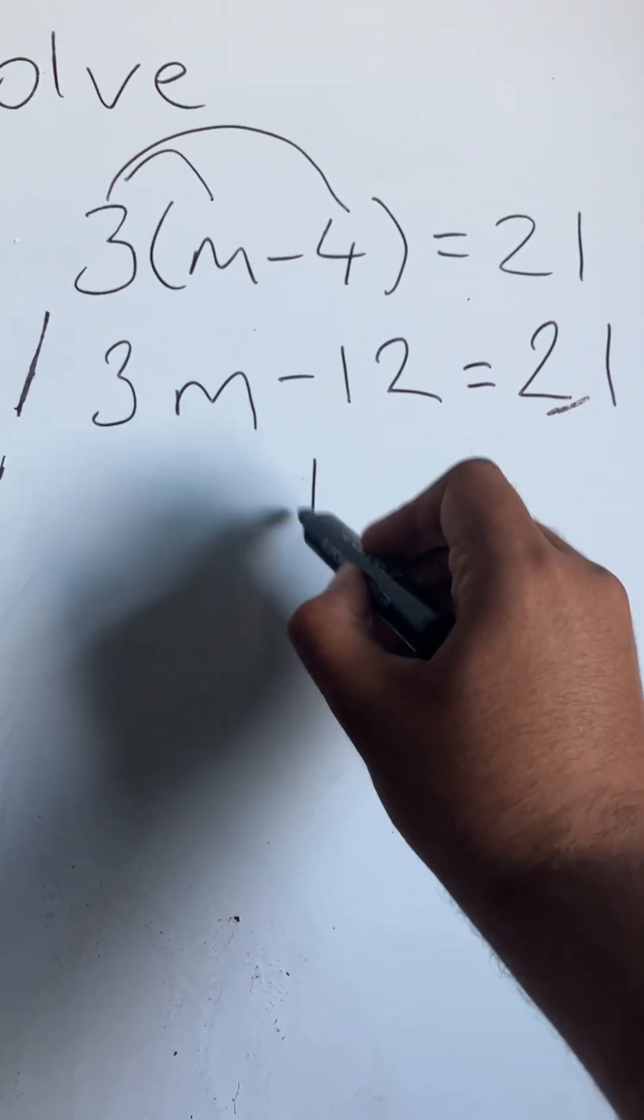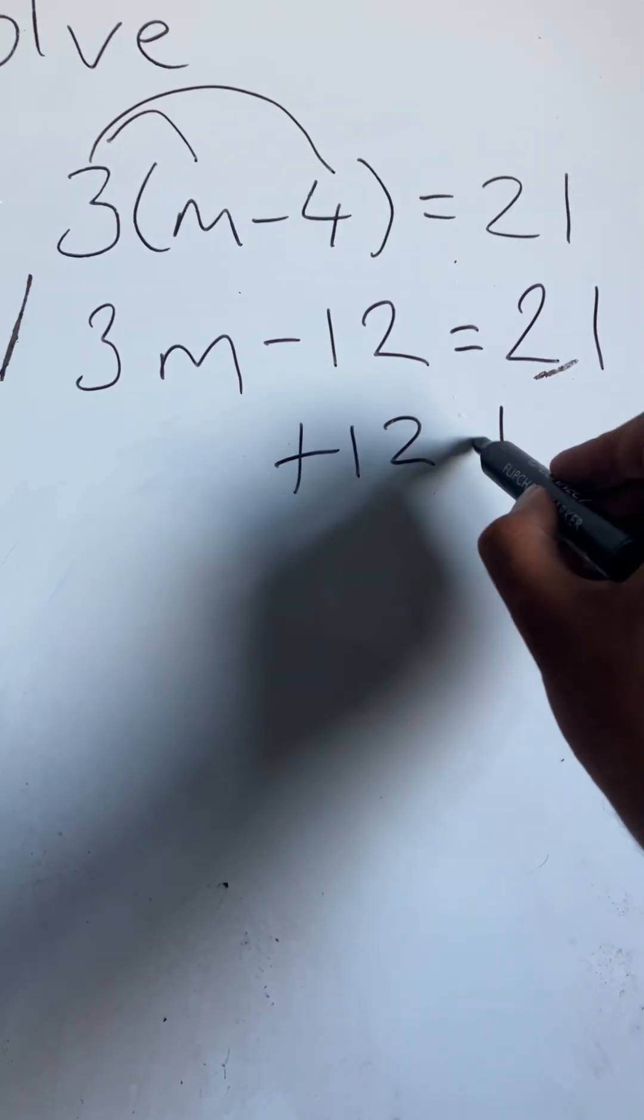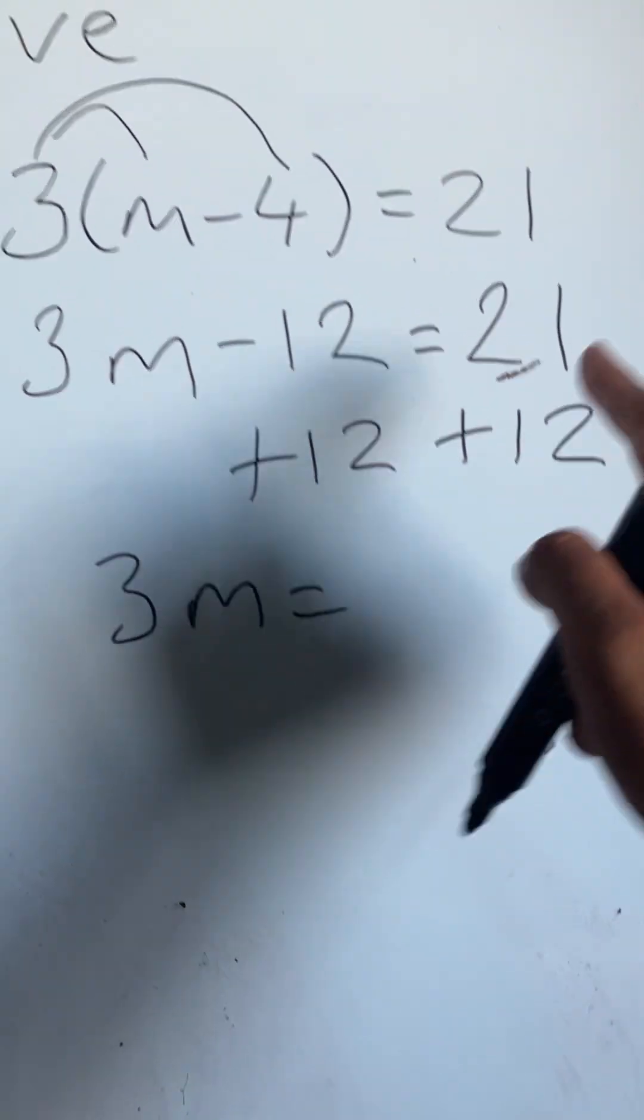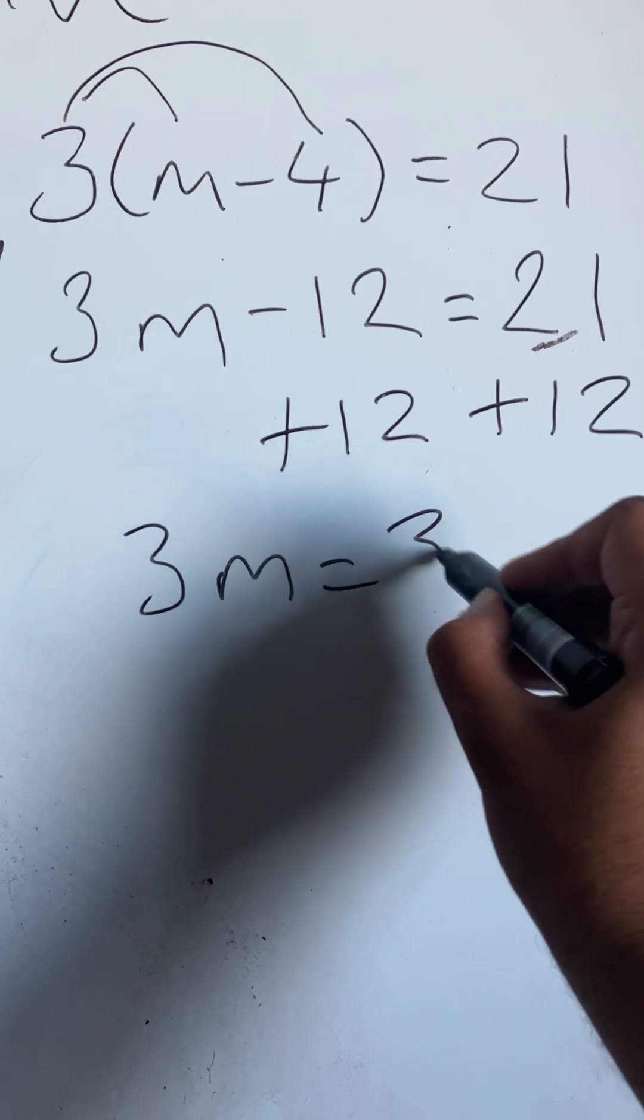I'm now going to add 12 to both sides to balance each side respectively. So I get 3m is equal to 21 plus 12 which gives you 33.